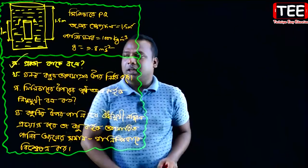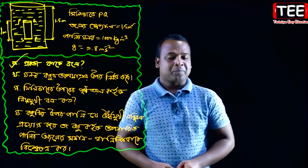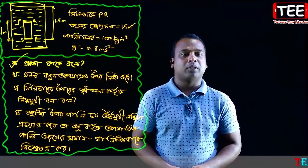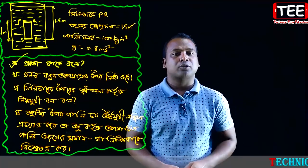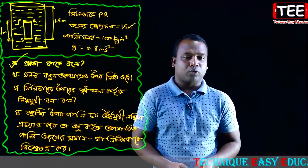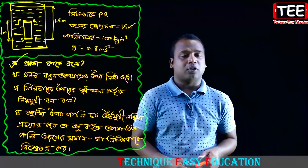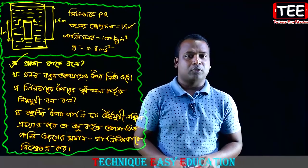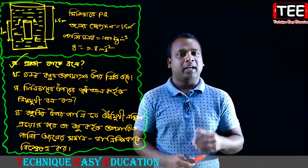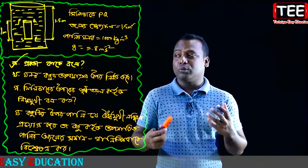First of all, we have to know that if the height is 1.5 meters, the value is 1.5 meters. The acceleration due to gravity is 9.8 meters per second square. The value is 2.5 meters per second square, and another value is 1.5 meters per second square.